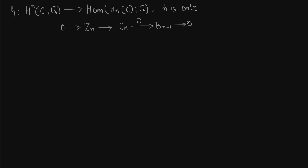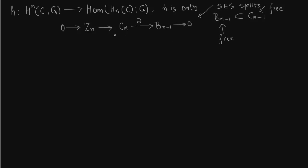This chain has been taken from the homology chain complex and this is a short exact sequence. You have the boundaries, and BN minus 1 is free precisely because CN minus 1 is free — you already know that these are free groups, generated by the underlying simplices. Since BN minus 1 is free, this short exact sequence splits. That is true for any short exact sequence in which the rightmost group is free — then the short exact sequence splits.